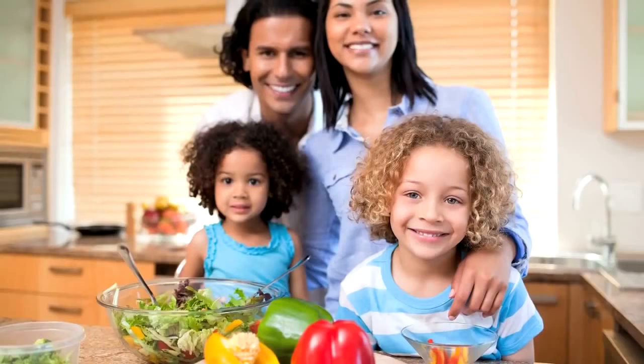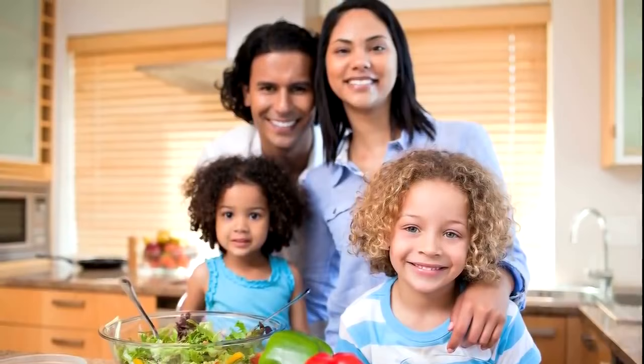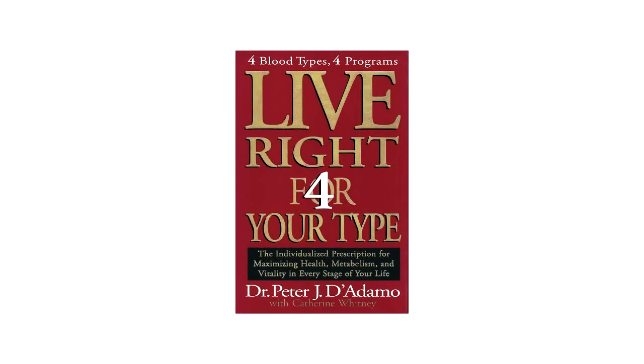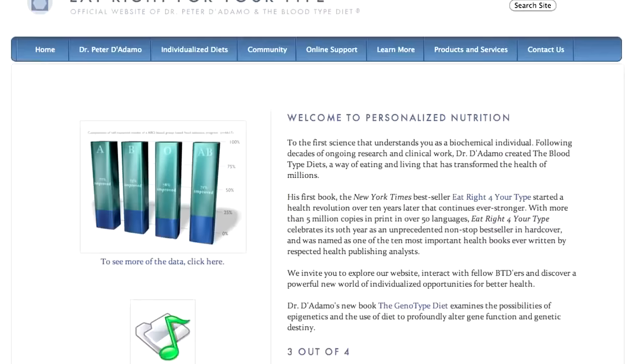This just goes to show how individualized nutrition and supplementation are critical for achieving peak health. To find out which foods contain lectins that you should avoid and which foods are best suited for optimal health, get a copy of Eat Right for Your Type or Live Right for Your Type, both available on foryourtype.com or Amazon and many other booksellers.